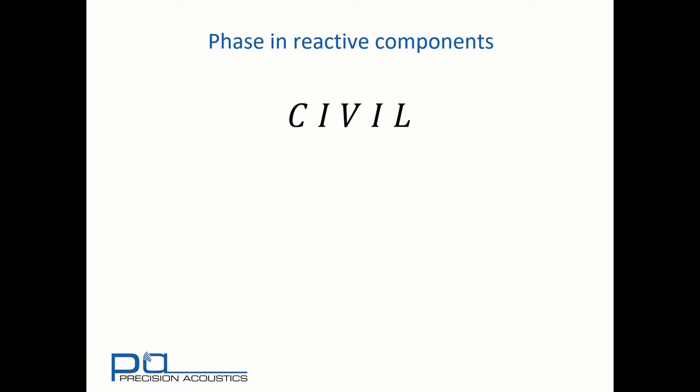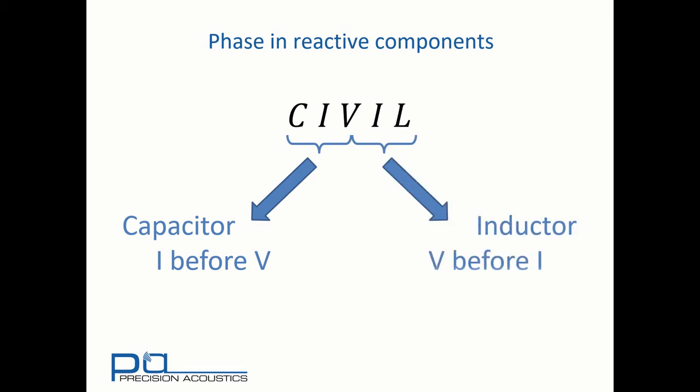To assist us to remember how the phase in reactive components behaves, the word CIVIL is a useful aid memoir. Because here we note that in a capacitor, current is 90 degrees ahead of voltage. I leads V. Whereas in an inductor, voltage is 90 degrees ahead of current. V is before I.